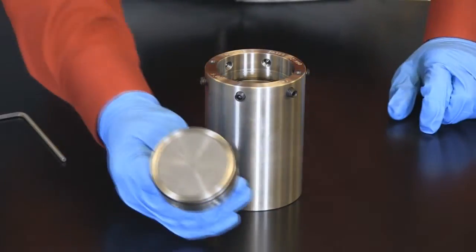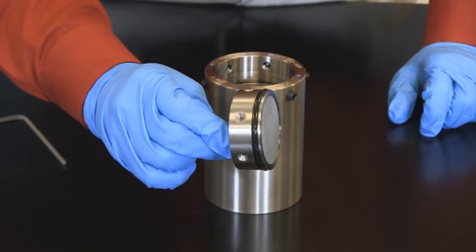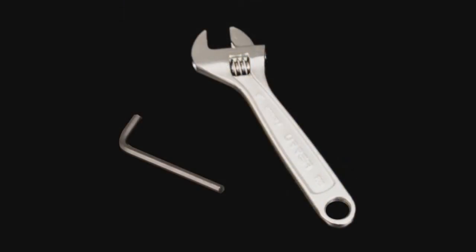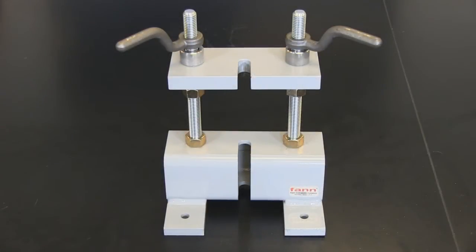Top and bottom cap valve stems are used when applying pressure and to allow filtrate to flow into a receiver. You'll need a hex key wrench and an open-end wrench to use this cell. Many labs use a cell clamp for added safety.